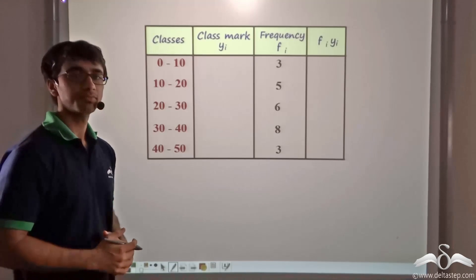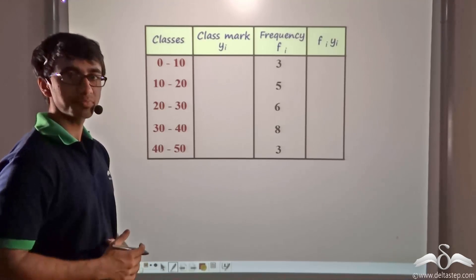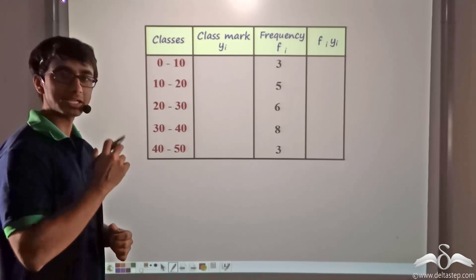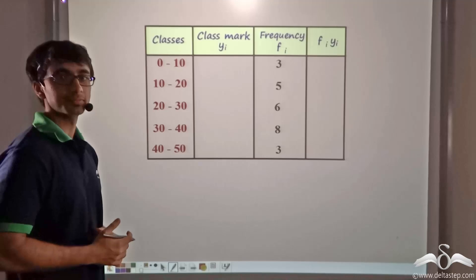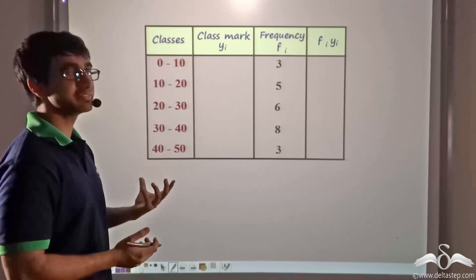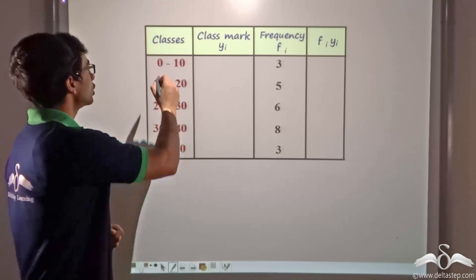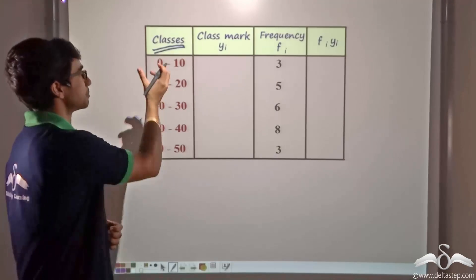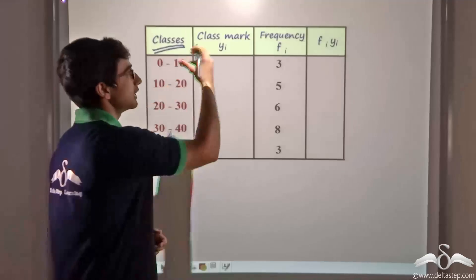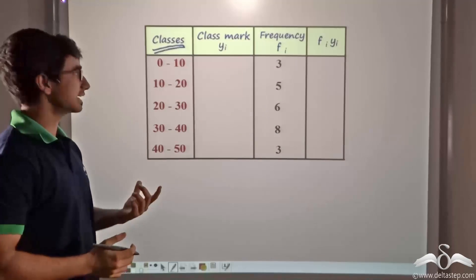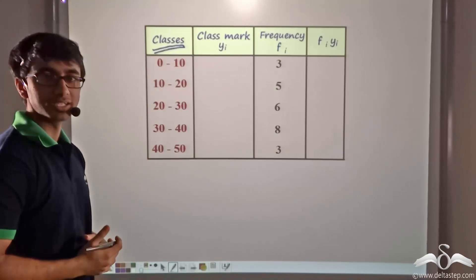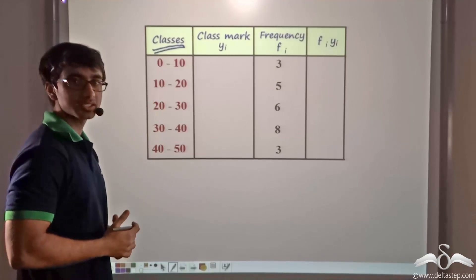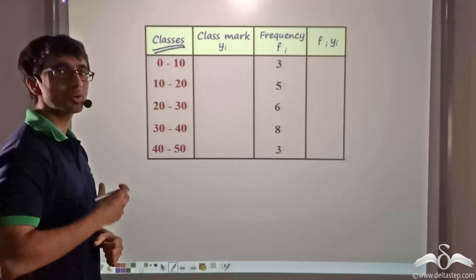We found out in our previous lecture how to find the mean if a discrete set of data is given to us, with the help of the direct method or the shortcut method. Now what do you think will happen if we have been given data in groups or classes? Obviously in that case we cannot consider a particular variate with which to multiply frequency, so we apply a somewhat different technique.